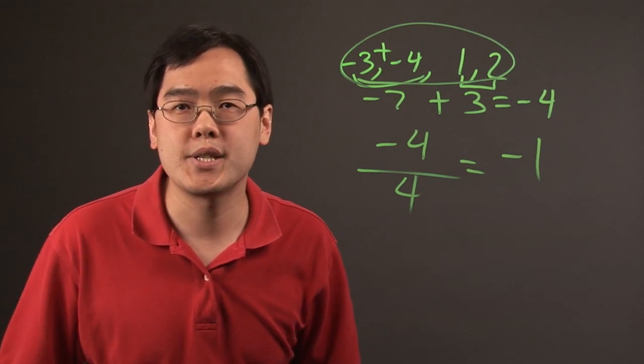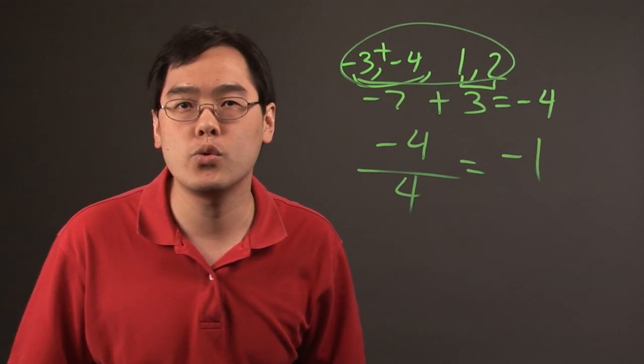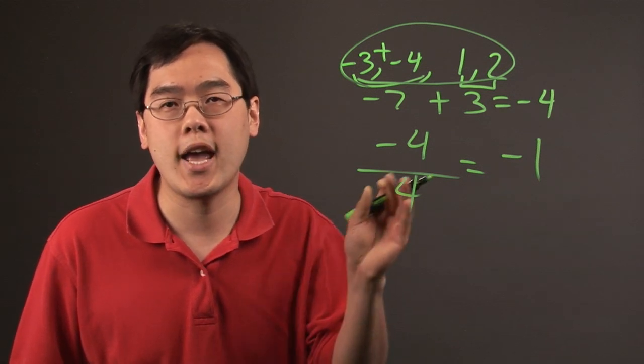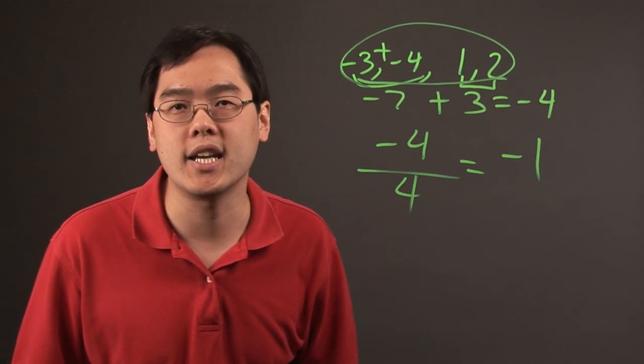So when you're finding the average of positive and negative values, you just follow the rules of finding an average and you'll be good to go. So I'm Jimmy Chang and that's how do I calculate averages of positive and negative numbers.